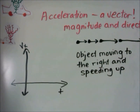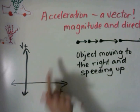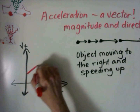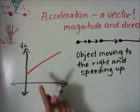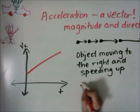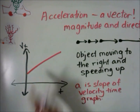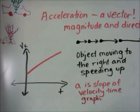If you plotted the motion on a velocity-time graph, we're moving to the right, which means the velocity is in the positive direction. And we're speeding up, which means our velocity is increasing. So our graph would look like this. Remember, acceleration is the slope of a velocity-time graph. You can see that the acceleration in this case is positive.